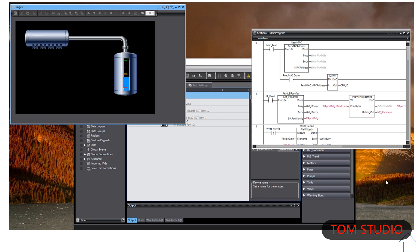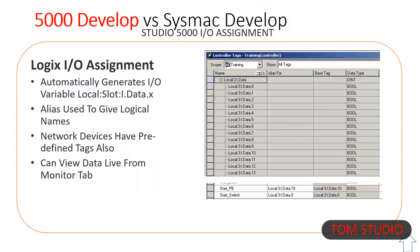Logix has canned tags for I/O that are not editable. Studio 5000 has an alias function to give them a logical name, added to a separate tag. The base tag is shown because you can alias an alias of an alias — giving multiple names to the same object can get confusing.